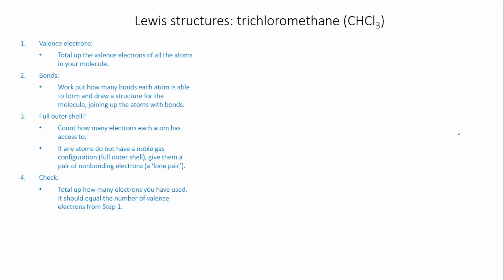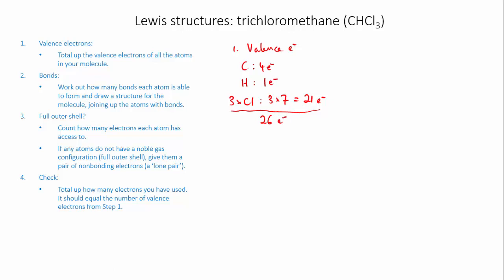Next let's try trichloromethane, CHCl₃. First, valence electrons: carbon has four, hydrogen has one, and I have three chlorines each of which has seven, which equals 21. When I total those up I've got 21 plus 5, which is 26 valence electrons to work with.